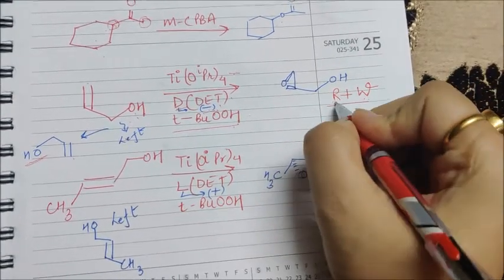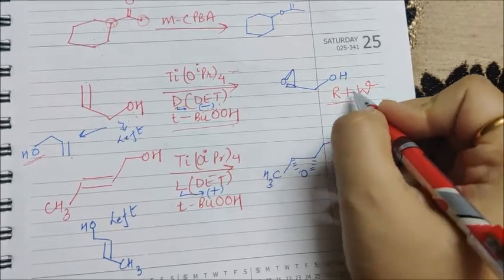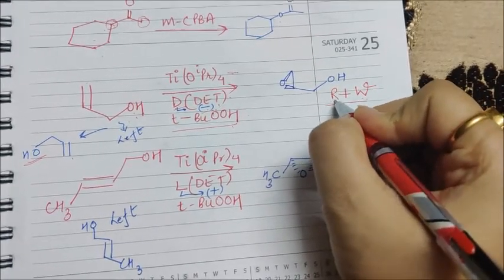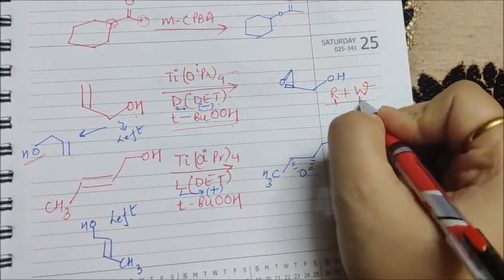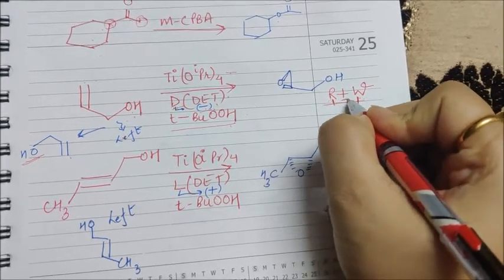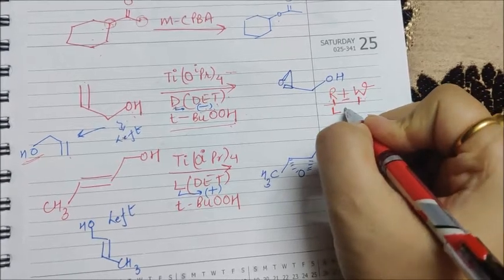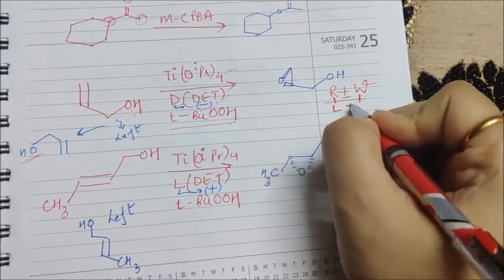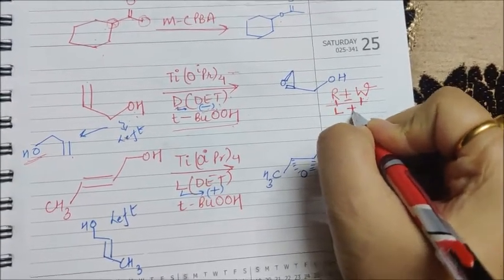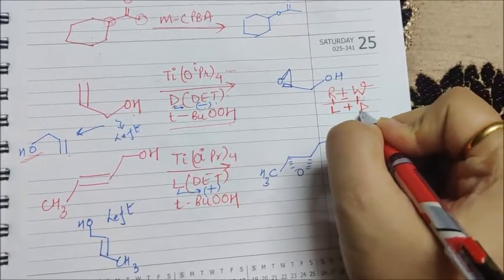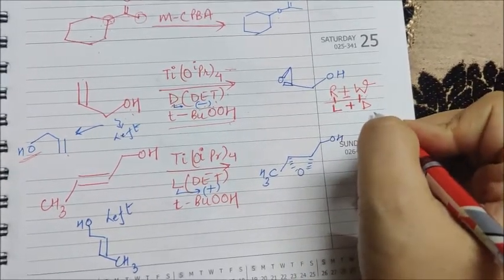That clearly means right OH will be wedge form if plus DET is used. Right? That means left OH will be plus and dash. Is that clear, class?